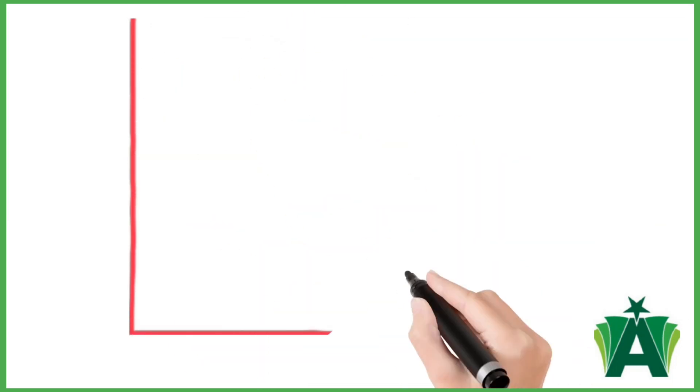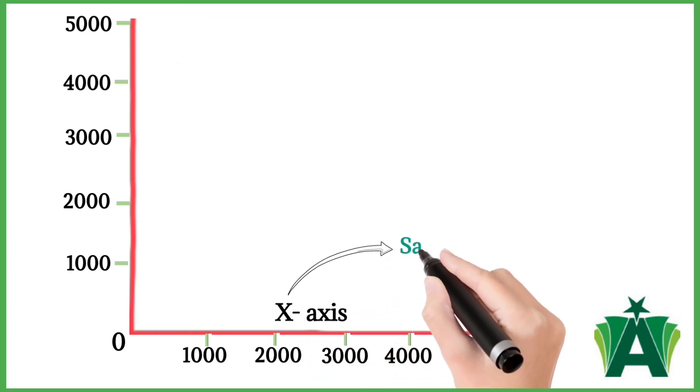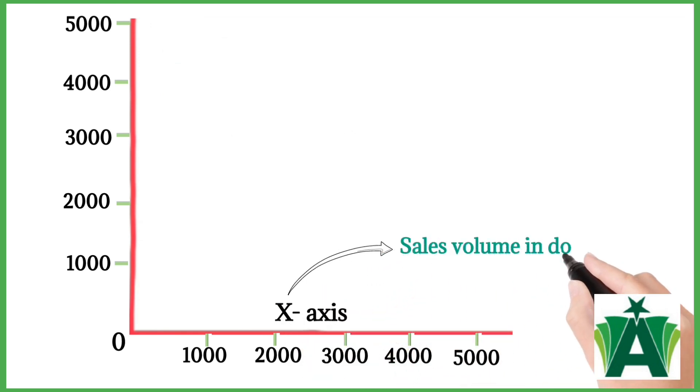The conventional break-even chart is constructed with a horizontal baseline. The x-axis is drawn and spaced into equal distances to represent the sales volume in dollars.